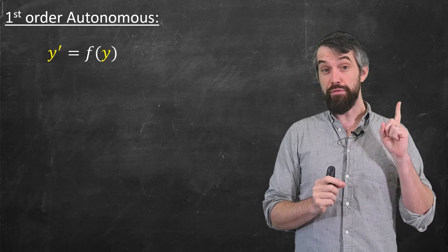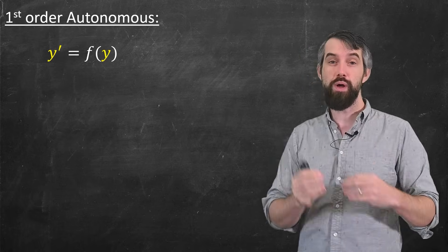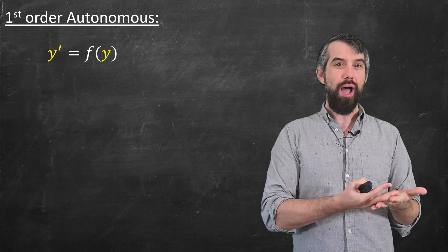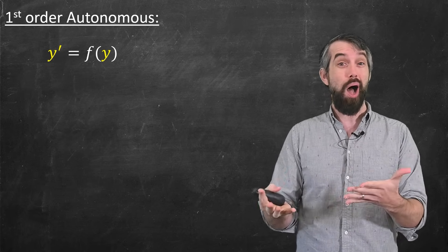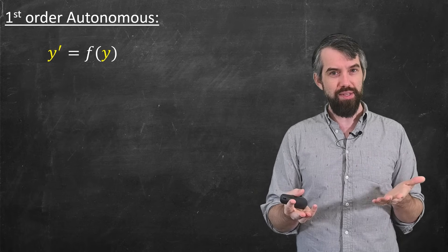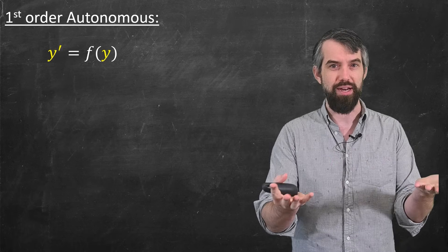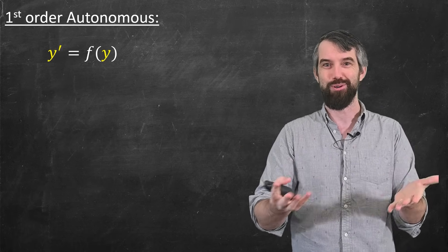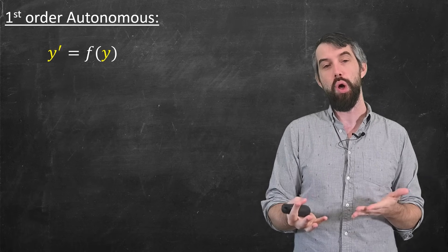The final thing I'll say about first order equations is autonomous ones. This is where y prime is just a function of y, there's no x dependency. And for the purpose of solving this equation, it's pretty simple, you just integrate. It means it's a separable, it's a really easy separable one, there's no dependency on x at all.